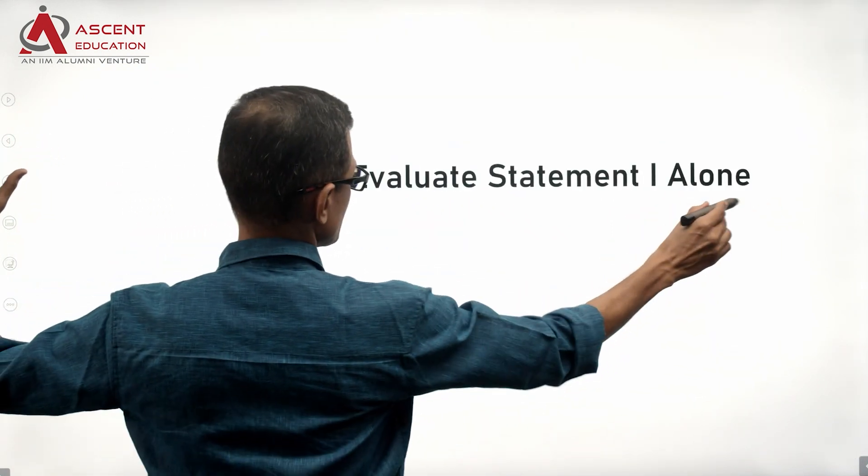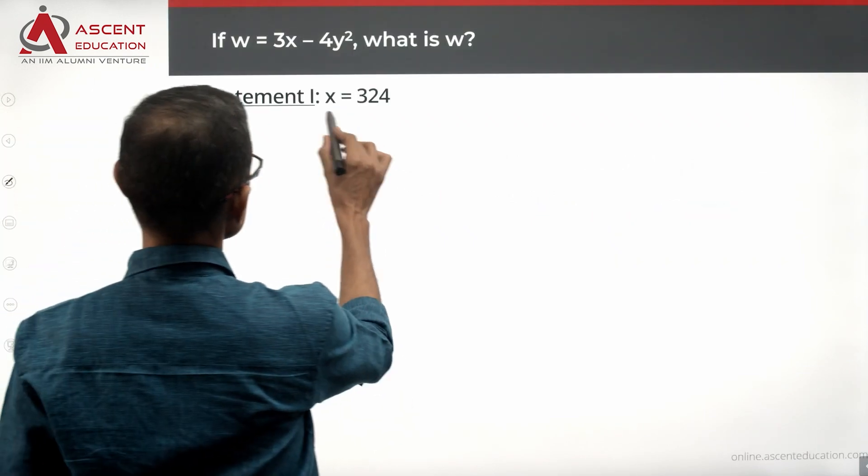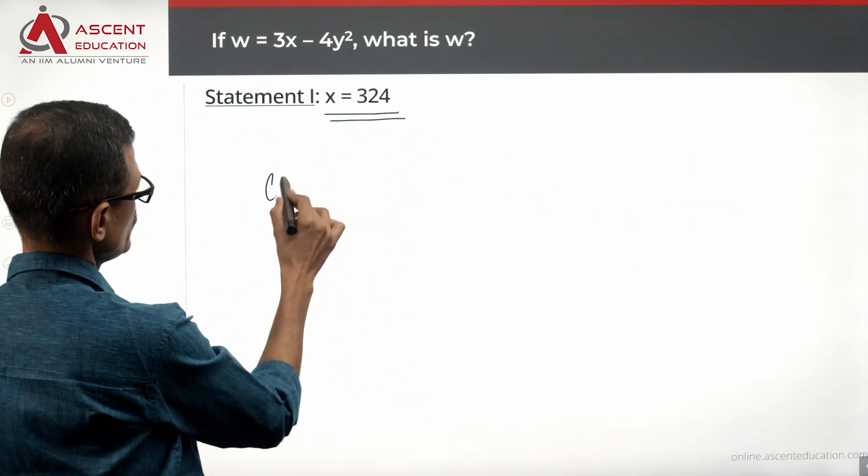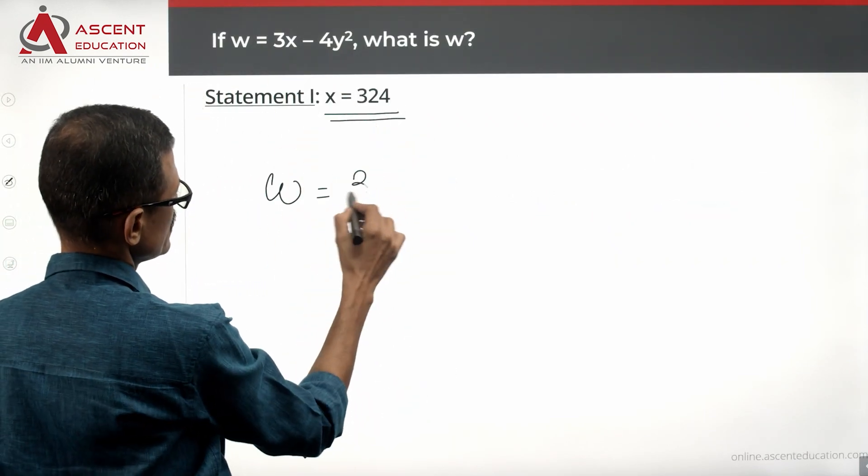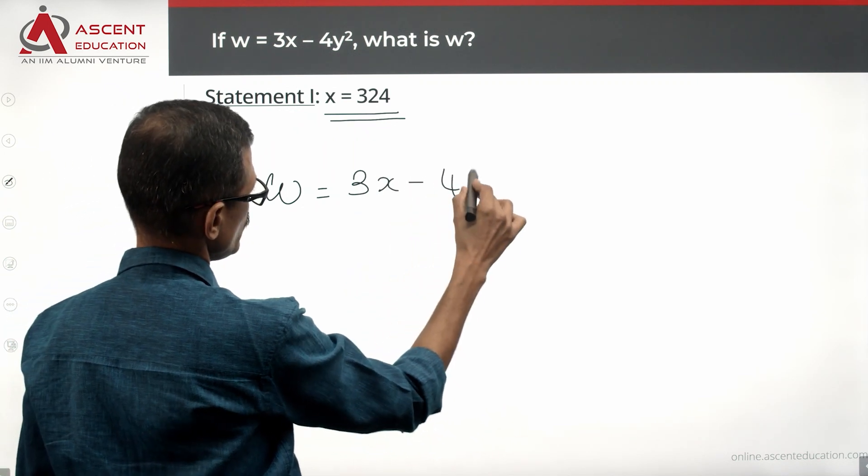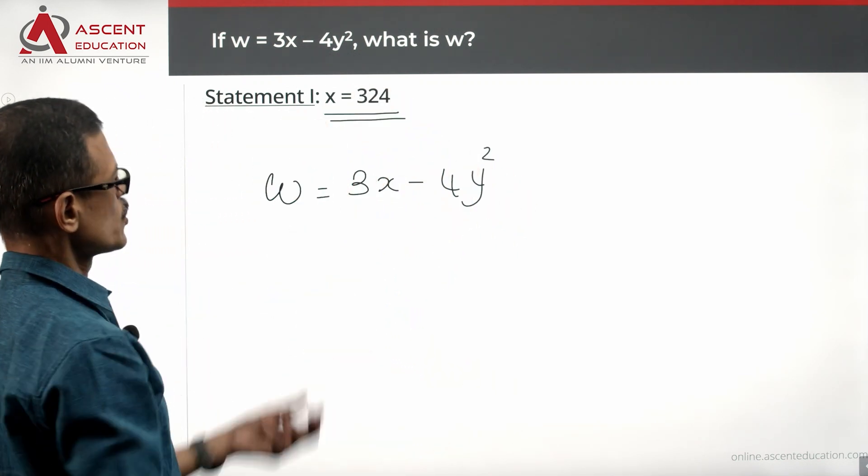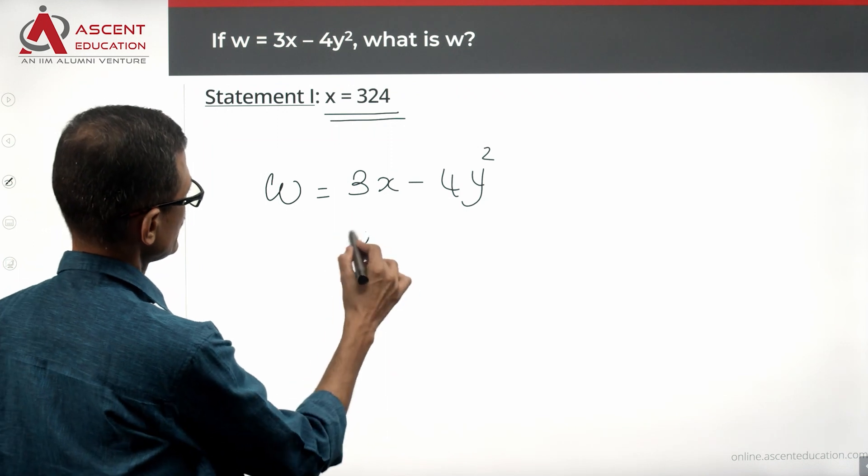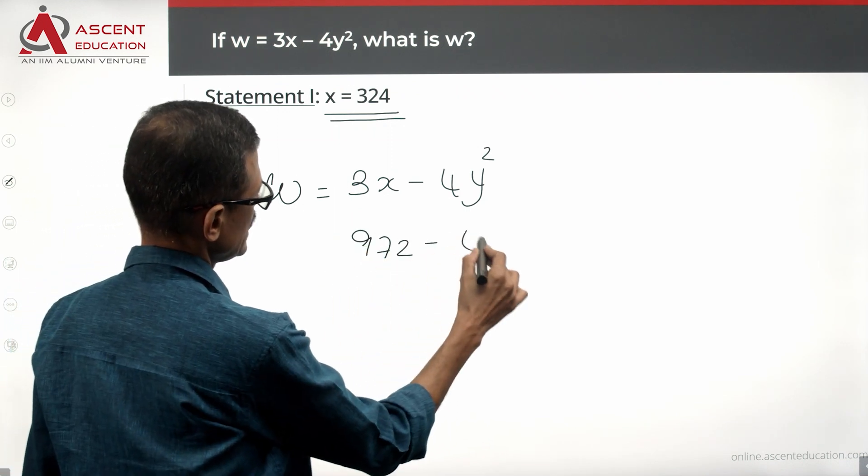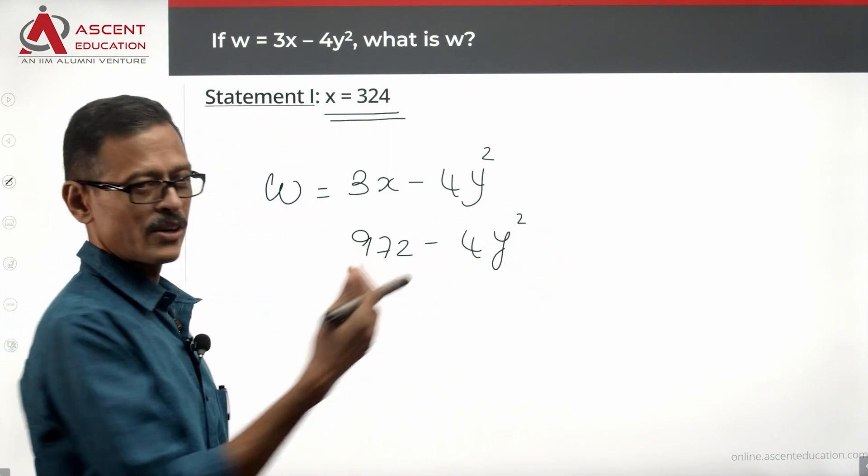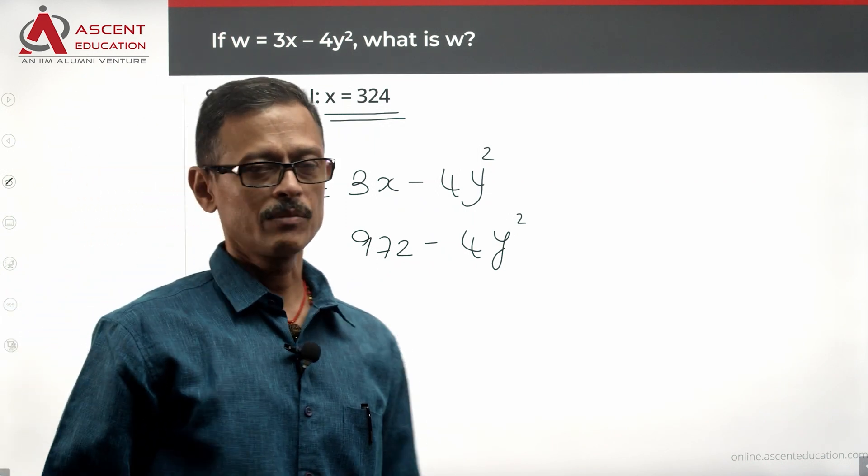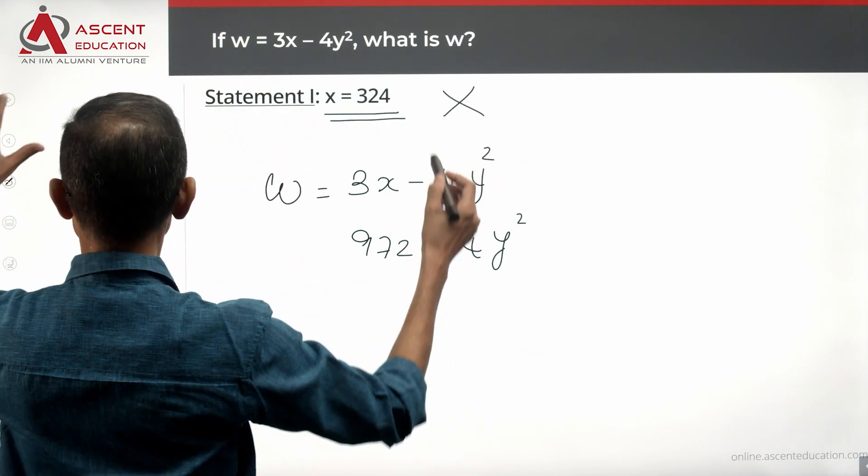Take a look at statement 1 and see whether we get something from it. Statement 1 says x = 324. So w = 3x - 4y². Substituting x, we get w = 972 - 4y². Without the value of y, we will not be able to find w. Statement 1 alone is not sufficient.